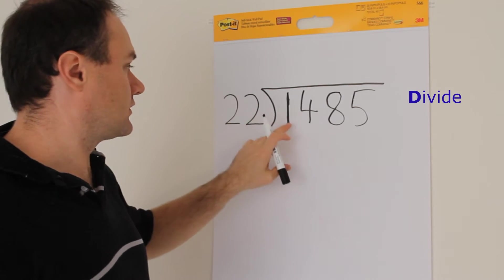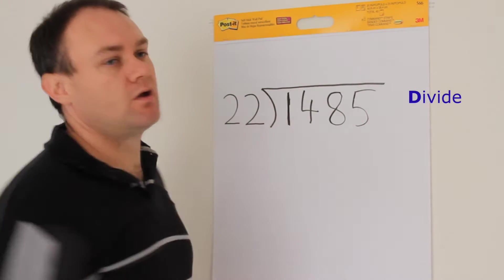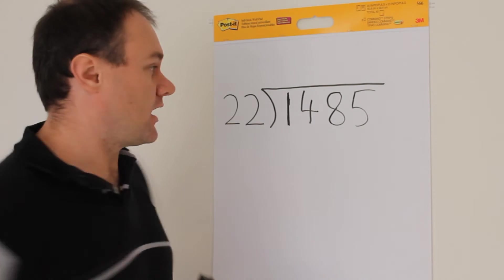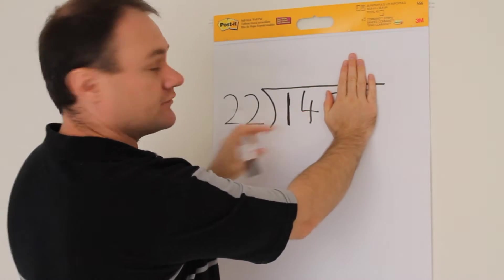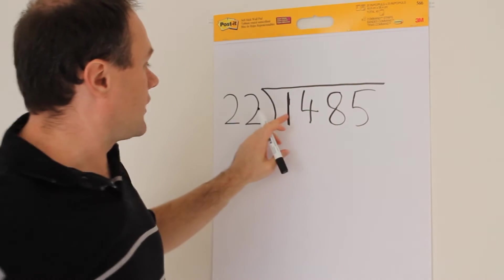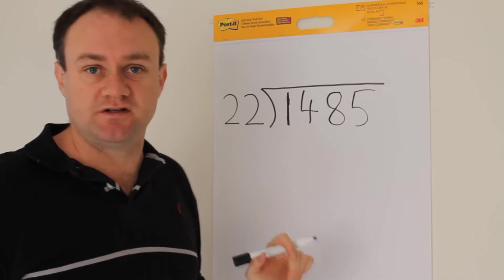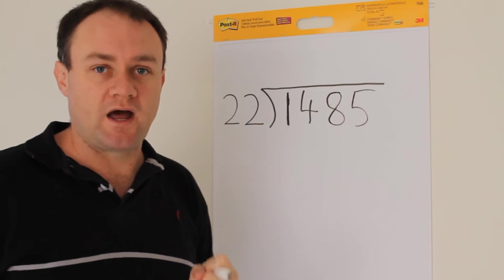So that's what we'll do here. First of all, how many times does 22 go into 1? Well, it's obviously too big. And it's also too big even for 14. So we've got to go straight to: how many times does 22 go into 148?